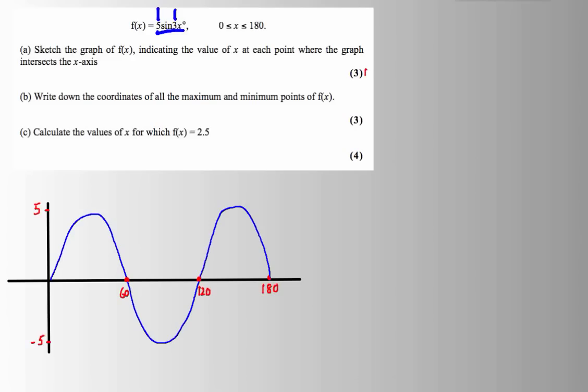Maximum minimum points next. Maximum minimum points, I can see these here. And it seems to me that I've got some quite nice symmetry going on to this. 30 there, and that must be at 5.